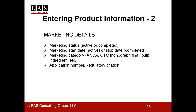The next part of your product information is your marketing details. Are you listing a new product or are you discontinuing one that's already in the system? You need to include the relevant dates: the start date when you first started marketing the product, or the stop date if you're discontinuing it, which would probably be when the last lot expires. The marketing category would be whether the product is an NDA, or an ANDA, or is it being marketed under an OTC monograph, or is it just a bulk drug ingredient. You also need to include the regulatory citation or an NDA/ANDA application number, if applicable.